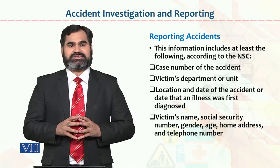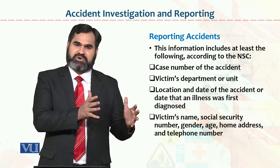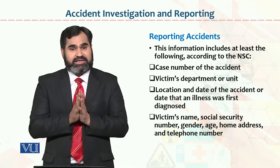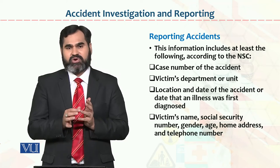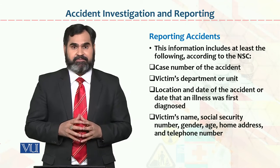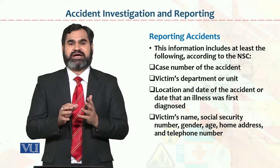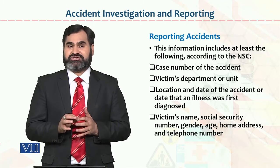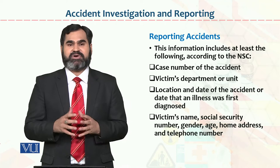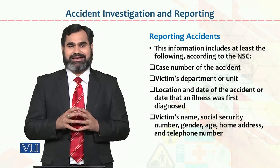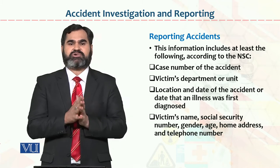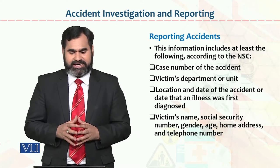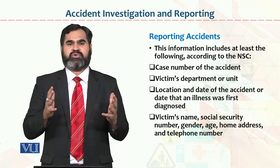Third: location and date — which part of the organization did the event occur in, and what was the date? That is, when the illness was first diagnosed, what was the date and location? Victim's name — the person who has been injured. Social security number, gender — whether male or female, age — which age group they belong to, whether 25 or 35 years old. Age is important because benefits are given accordingly later. Home address and telephone number — dear students, knowing all this information is very important to prepare a comprehensive report.